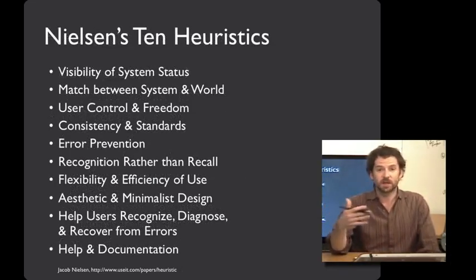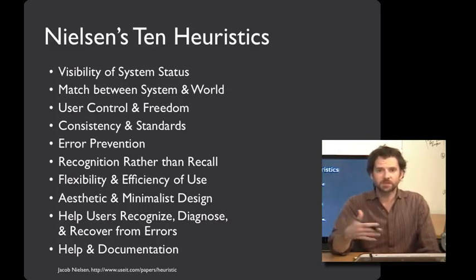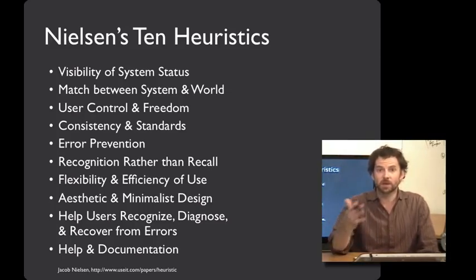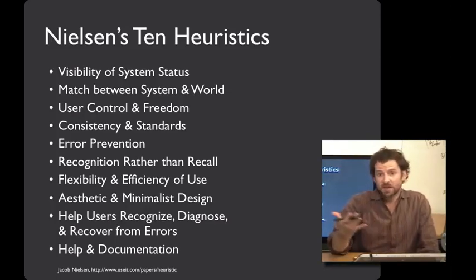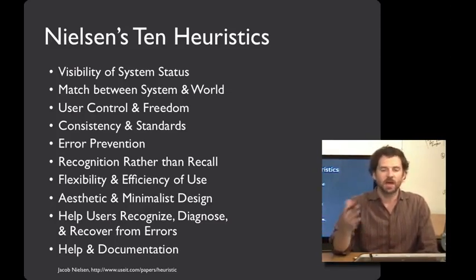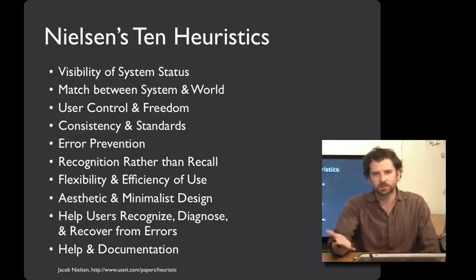Here are Nielsen's 10 heuristics, and they're a pretty good set. That said, there's nothing magic about these heuristics — they do a pretty good job of covering many of the problems you'll see in many user interfaces. But you can add any that you want and get rid of any that aren't appropriate for your system. We're going to go over the content of these 10 heuristics in the next couple of lectures, and in this lecture I'd like to introduce the process you're going to use with these heuristics.